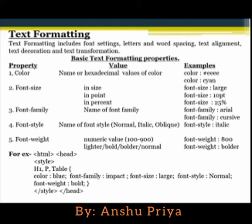Here you can see some basic text formatting properties. The first one is color. By using the color property you can change the color of the text. The value for the color property can be a color name or a hexadecimal color code.